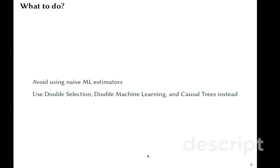So the bottom line: you should not use machine learning naively. And if you really need, you use double selection, double machine learning, or causal trees, which we are going to see soon.